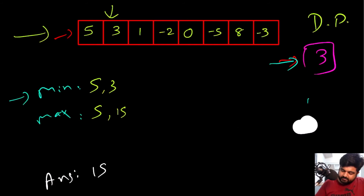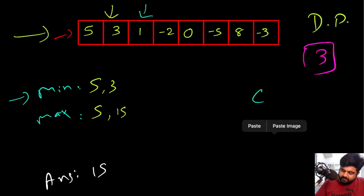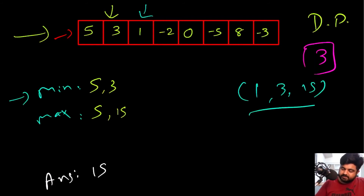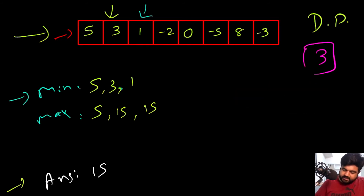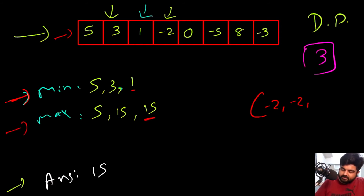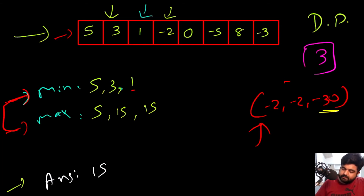Next value is -2. The three candidates are: -2 itself, -2 × min(1) = -2, and -2 × max(15) = -30. So min = -30 and max = -2. For value 0, all three candidates are 0, so min = 0, max = 0. For value -5, the candidates are -5, -5×0 = 0, and -5×0 = 0, so min = -5, max = 0, and answer stays at 15.